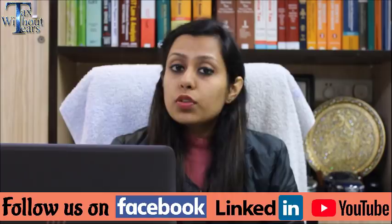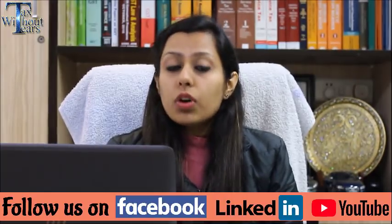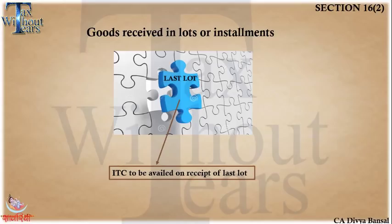If you receive goods in installments or lots, the treatment of ITC is as follows: as per the second condition for booking credit, you must have received the goods and services. So if you are receiving goods in lots, only when you receive the last lot can you claim the credit. However, you can avoid this by having multiple billings — for each lot you can have separate billing done in order to take the credit on the spot instead of getting credit only on the last lot.